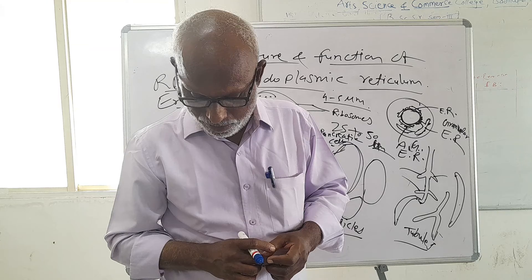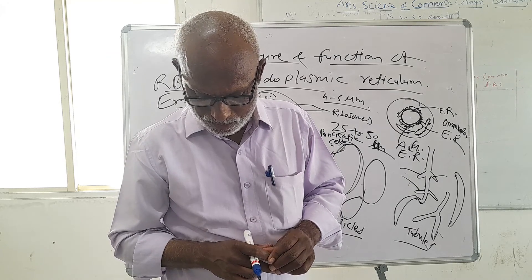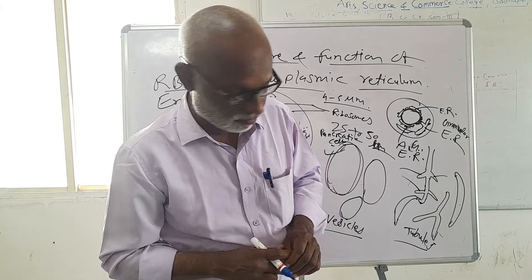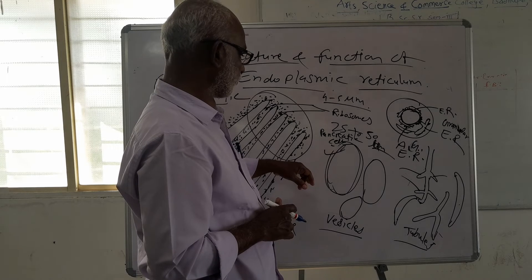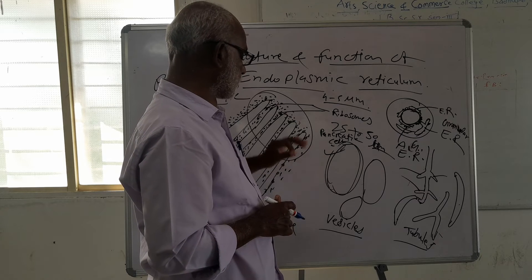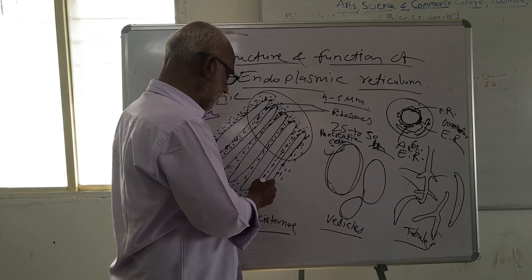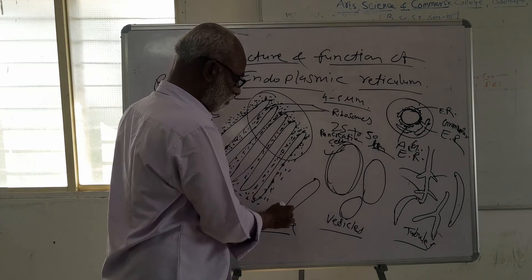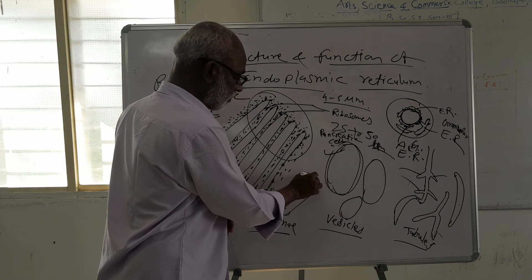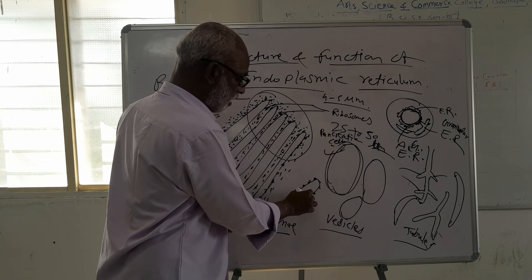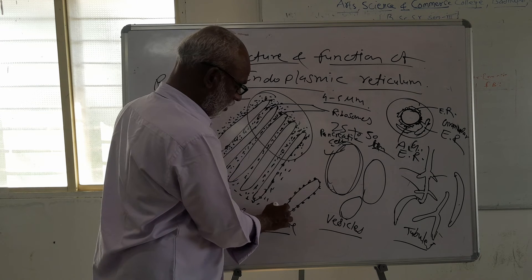Endoplasmic reticulum with ribosomes is known as rough endoplasmic reticulum. When ribosomes are present on the endoplasmic reticulum, it is called rough endoplasmic reticulum. On the surface of the cisternae, ribosomes are attached — this type with ribosomes attached is rough ER.